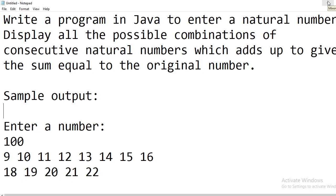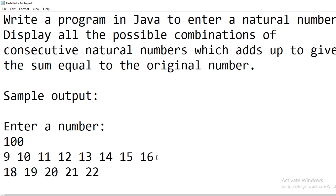In this video, let us discuss a Java program to accept a natural number and display all the possible combinations of consecutive natural numbers which add up to give the sum equal to the original number. For example, if you enter 100 as input, then 100 can be obtained by adding consecutive natural numbers from 9 till 16, or by adding consecutive numbers from 18 till 22.